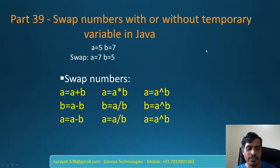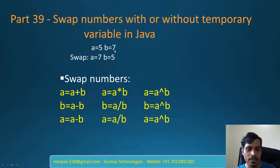Hi, this is Venkat Narayana from Sonia Technologies. Today I am going to discuss swap numbers with or without temporary variable in Java. For example, here a is equal to 5, b is equal to 7. We need to swap these values like a is equal to 7, b is equal to 5. We will discuss four approaches for swapping numbers.